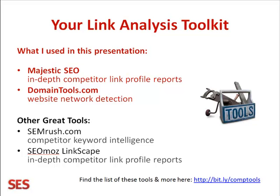Domain Tools is excellent for looking at the ownership records for domains and tracking those to other domains that that particular owner may own — there's a lot of other things it can do. SEMrush — if you want to find out what other rankings a competitor has, this is a very powerful tool. It will give you a complete listing of their search engine rankings, all the keywords for organic — that's the stuff you don't pay for — and for their paid. SEOmoz is similar to Majestic, at least the Linkscape tool. Sometimes I get both a Linkscape report and a Majestic SEO report and combine the two to get a very thorough backlink result for a competitor.